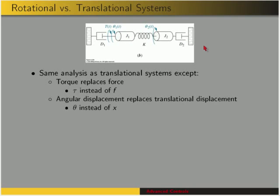This analysis is the same as translational systems, except here torque replaces force. So we're going to use tau instead of F. Capital tau just looks like a capital T, so we use that whenever we take the Laplace transform. And angular displacement replaces translational displacement, so our variable is going to be theta instead of x.